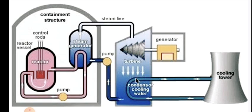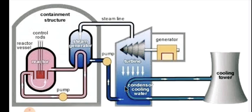The steam is cooled by circulating cold water from the cooling tower. The steam gets condensed back into water, converting from steam into liquid form as the cold water absorbs the heat from the steam.